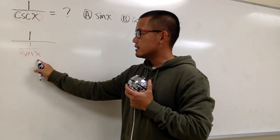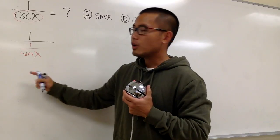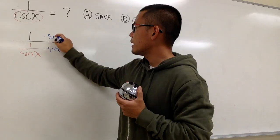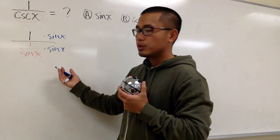We have the sine x in the denominator for this little fraction. What we can do is, we are just going to multiply sine x on the bottom, and also do the same on the top.